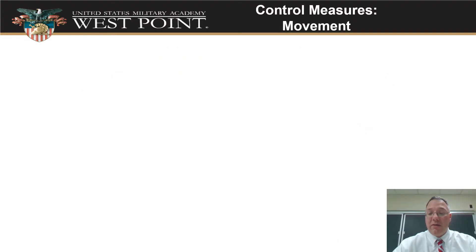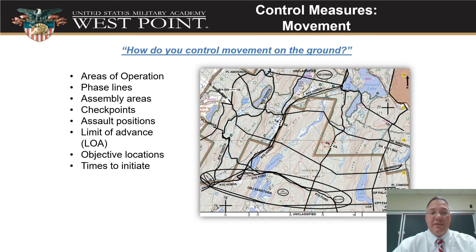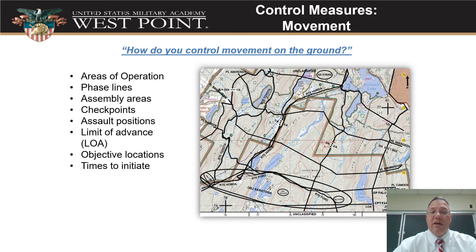We also have control measures tied to our movement — where we're going to be on the ground — so we can help our soldiers be in the right spot at the right time. This all comes in with our overlays. One element is the area of operations, giving people a left and right boundary to control where they move. We can have phase lines to control timing, showing where soldiers should be during which portions of a mission. You can use assembly areas, checkpoints, and assault positions to show exactly where you want them — such as the last covered and concealed position before hitting the objective. We have a limit of advance defining how far to attack, objective locations so they know where they're going, and times to initiate actions tied to all of this.